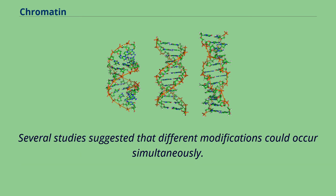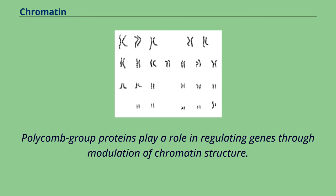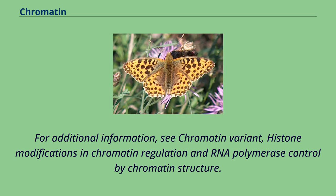Lysine trimethylation can either lead to increased transcriptional activity or transcriptional repression and chromatin compaction. Several studies suggested that different modifications could occur simultaneously. For example, it was proposed that a bivalent structure is involved in early mammalian development. Polycomb group proteins play a role in regulating genes through modulation of chromatin structure. For additional information, see chromatin variant, histone modifications in chromatin regulation, and RNA polymerase control by chromatin structure.